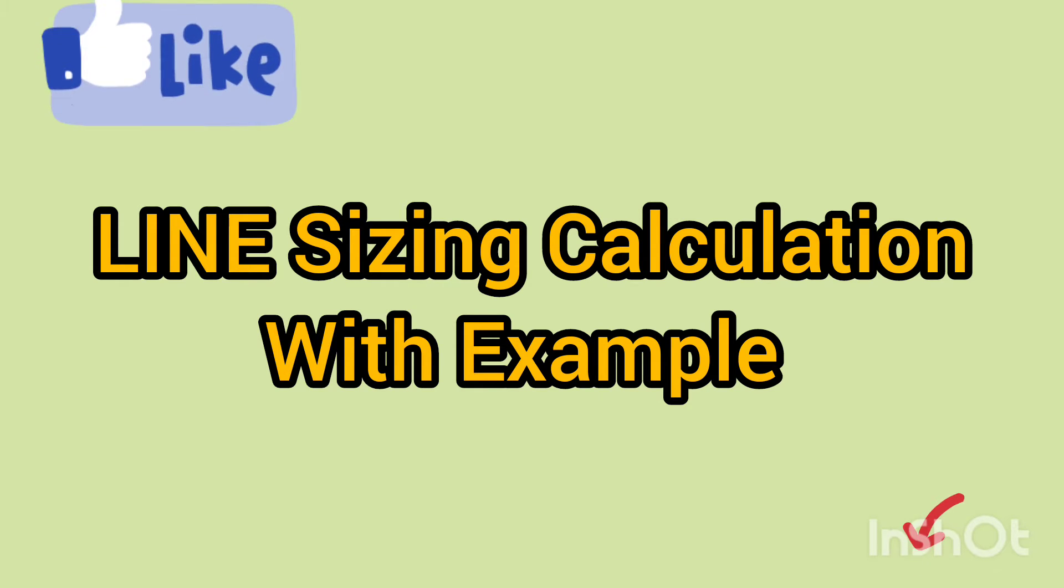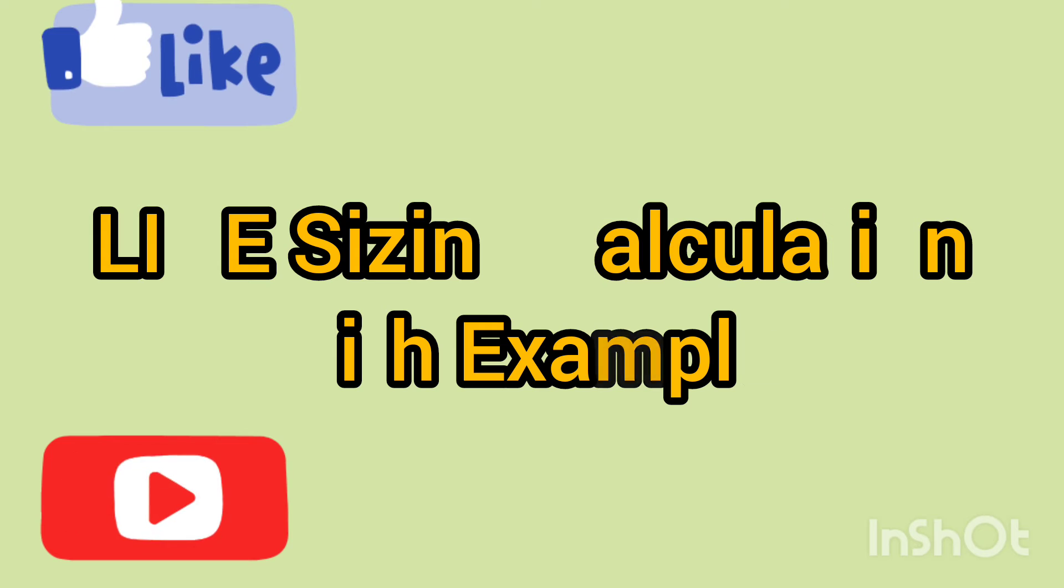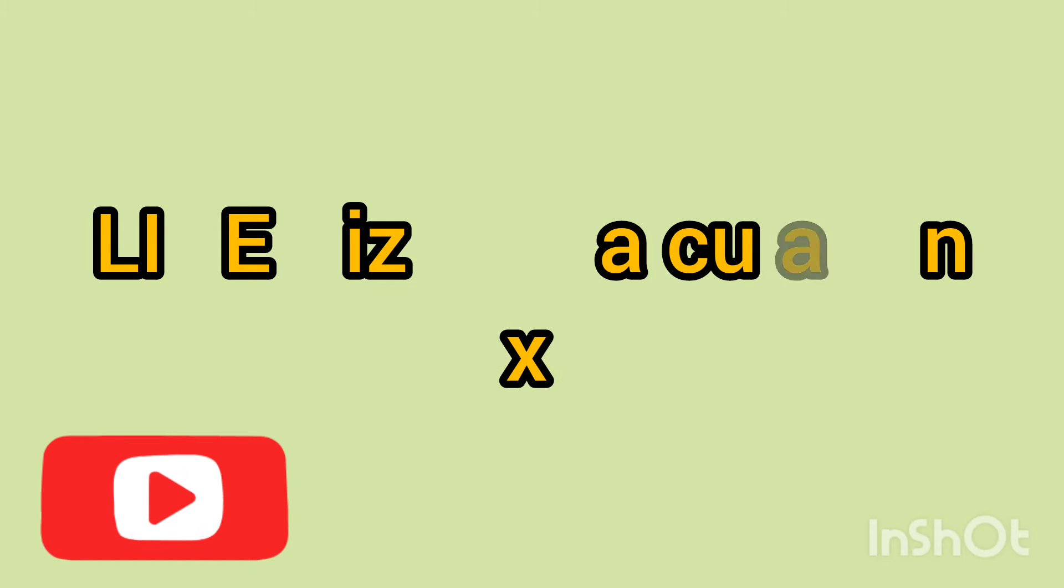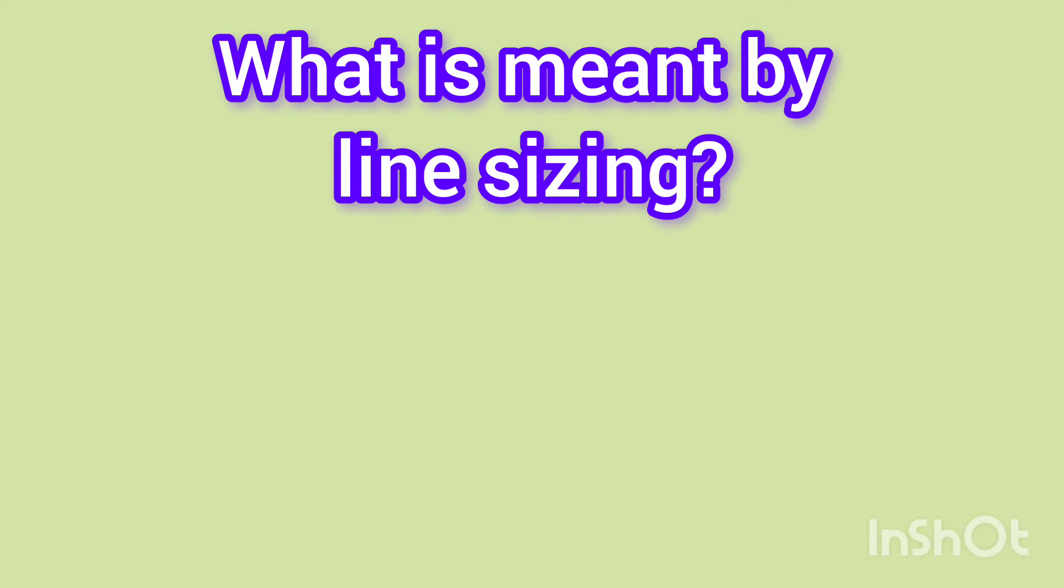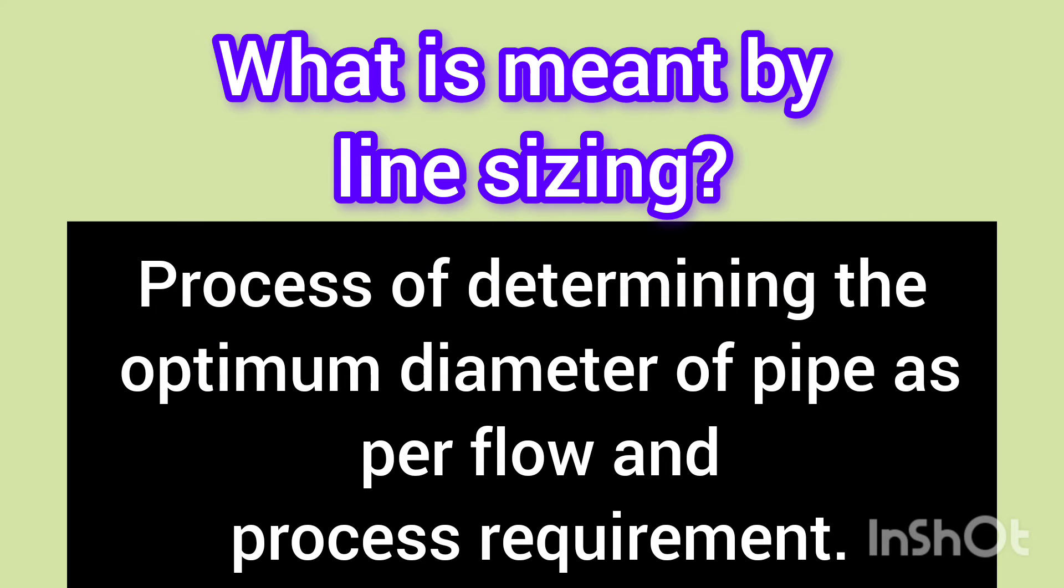So let's get started. First, let's talk about what exactly is line sizing. Line sizing is the process of determining the appropriate diameter of pipes or pipelines used in fluid transportation systems. It's a crucial step in industries such as oil and gas, chemical, fertilizer, and mines.